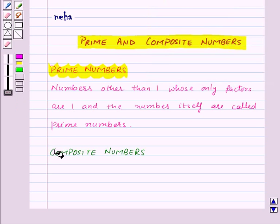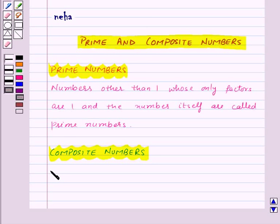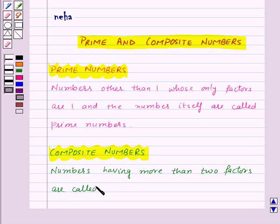Now let us see what are composite numbers. Numbers having more than two factors are called composite numbers.